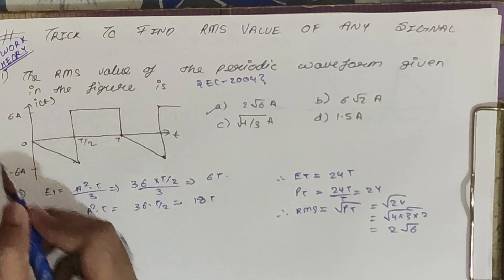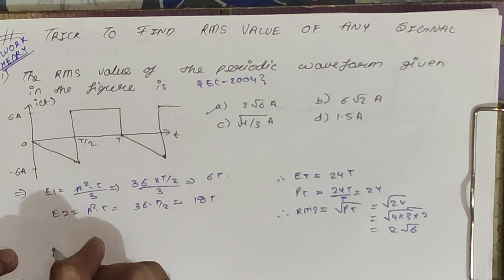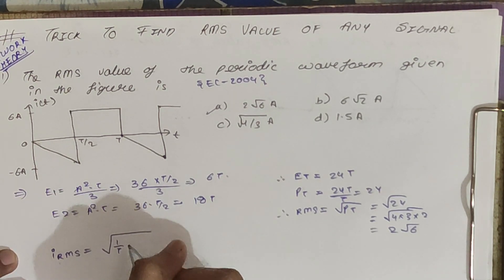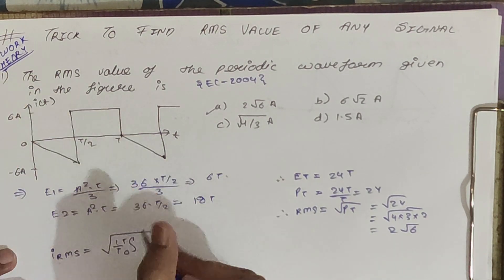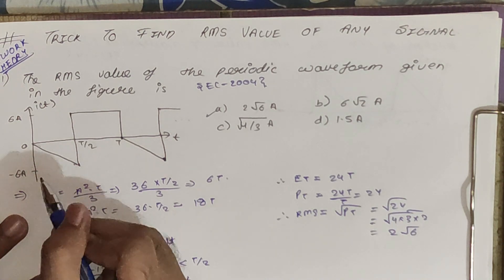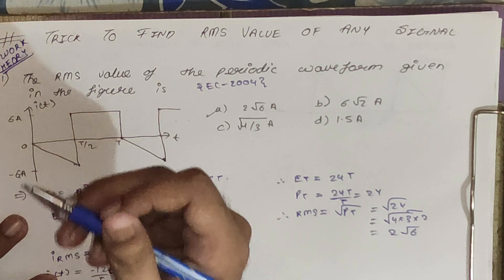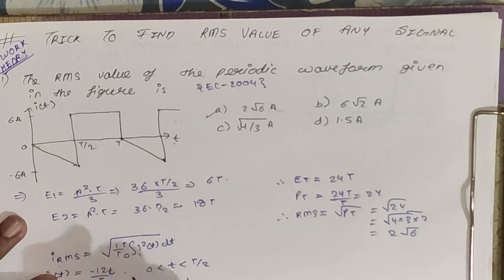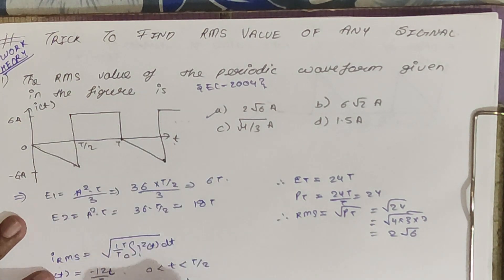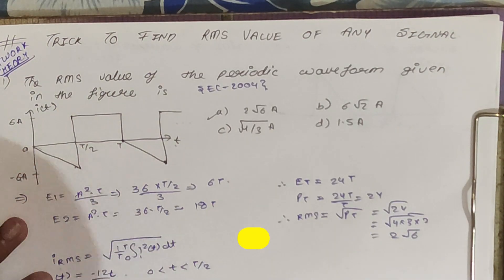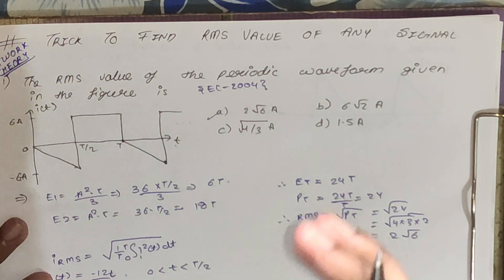Let's also see the traditional way so we get a proper idea of the trick. The traditional way to solve this type of problem uses the RMS formula: i_rms equals the square root of (1/T) times the integral from 0 to T of i²(t) dt. You first have to find the equation of the waveform. For 0 to T/2, it is −12/T × t (slope × x with y-intercept zero), and for T/2 to T it is simply 6. You can imagine how much time this integration wastes — the traditional way takes around 2+ minutes, but this trick takes less than 30 seconds.